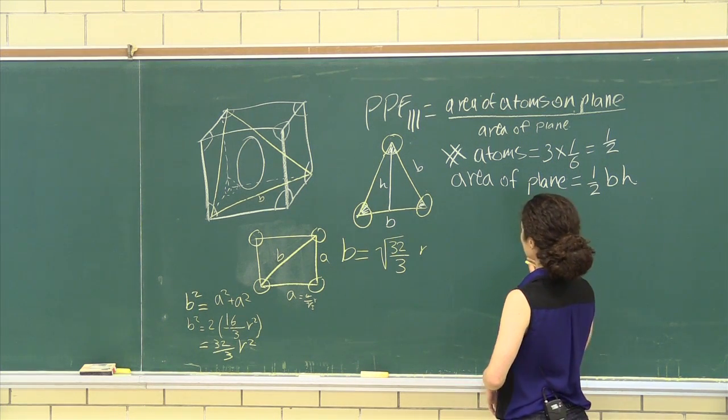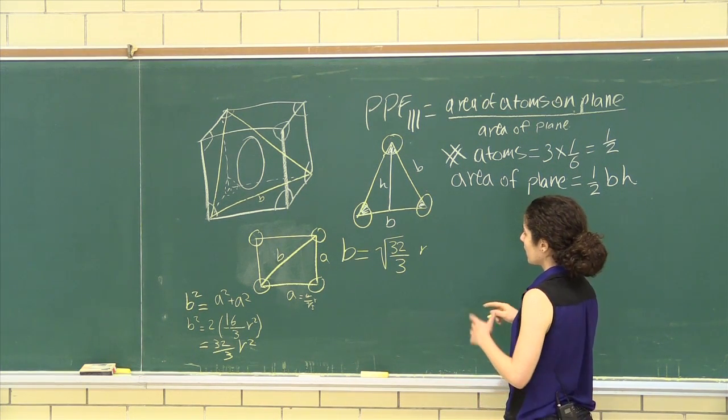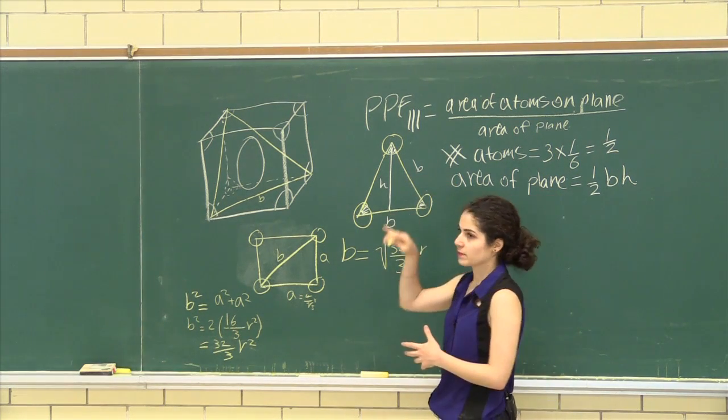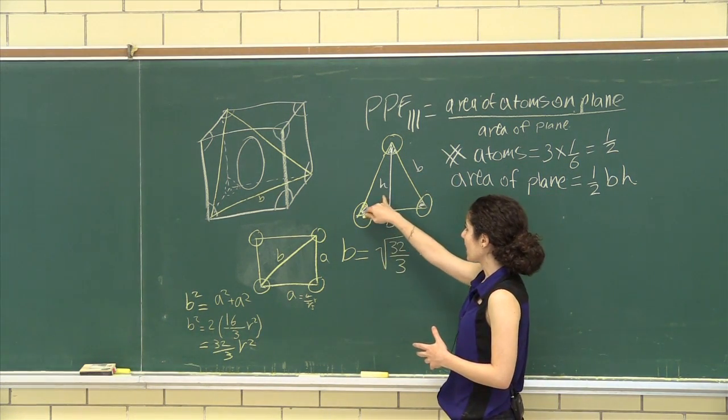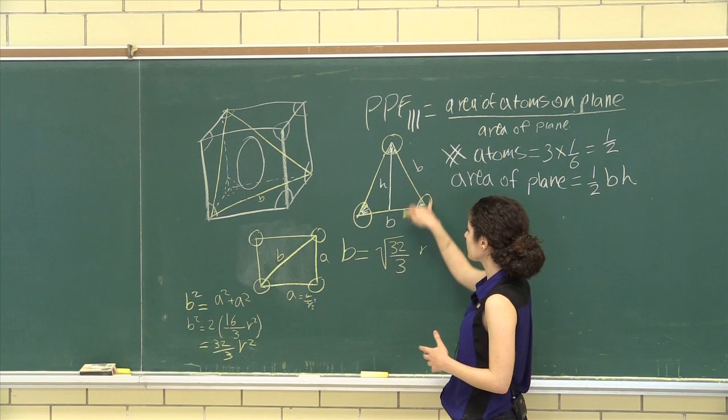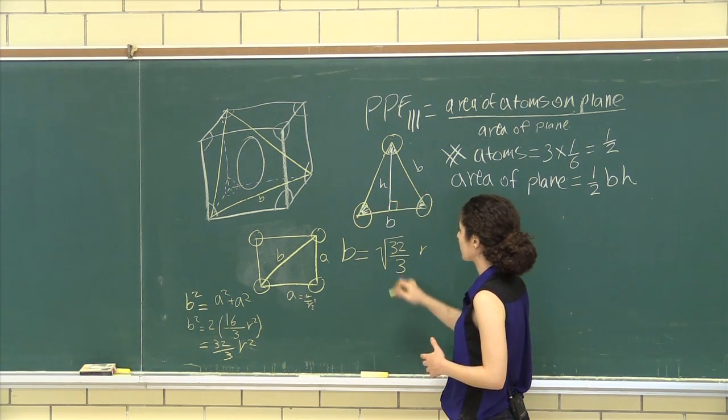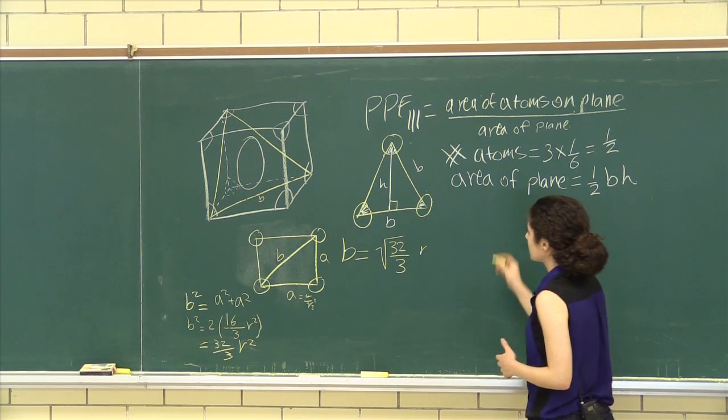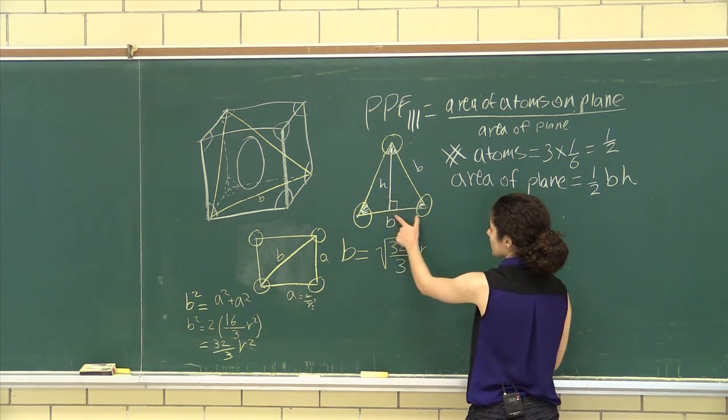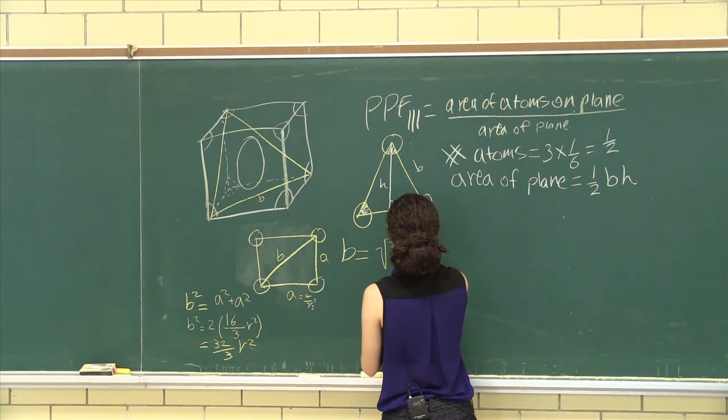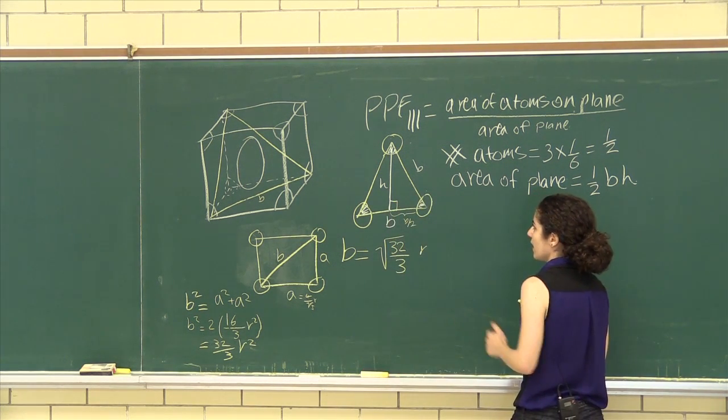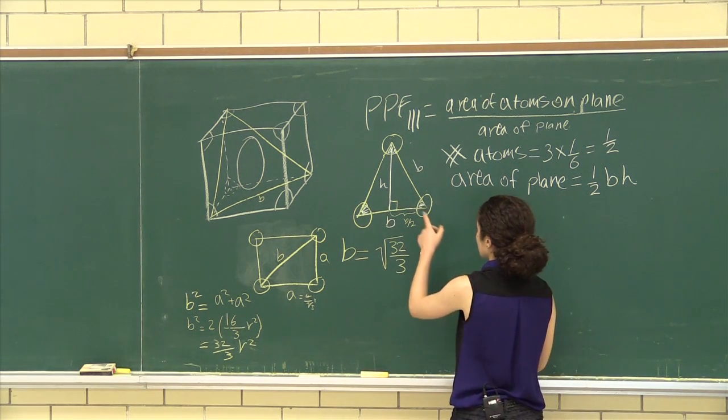Now we move on to finding our H. Like in previous 1, 1, 1 planar packing factors, we find the H by using this geometry here, where we have this right angle triangle. So in this case, this is B over 2. Let's calculate H.